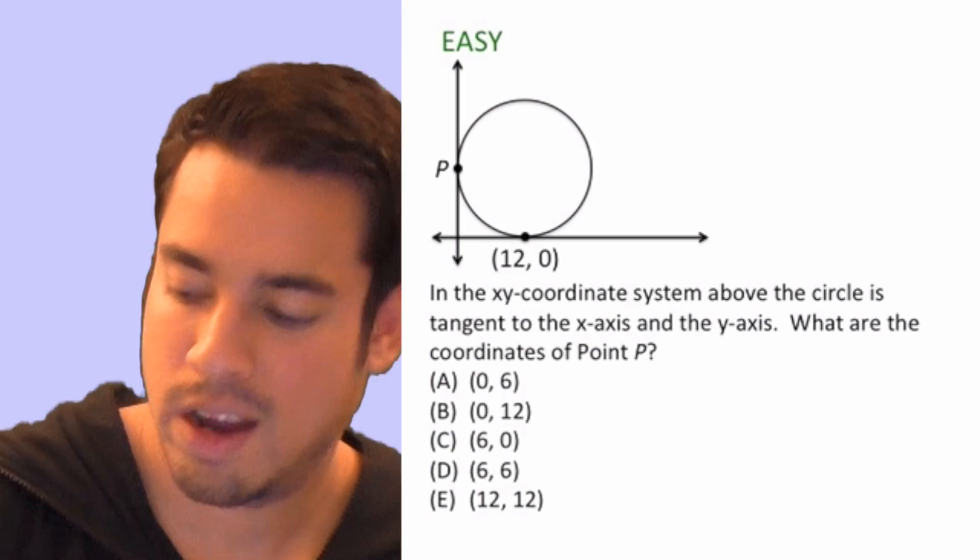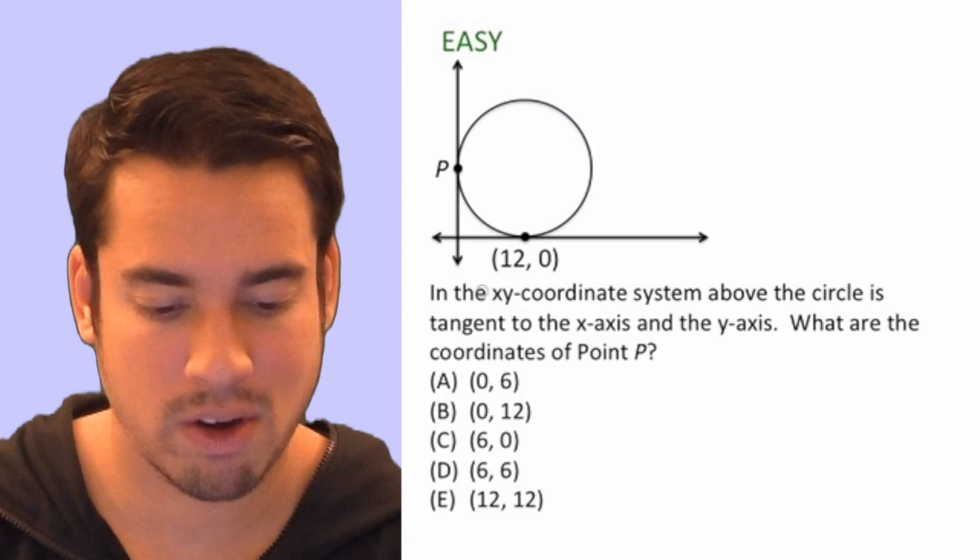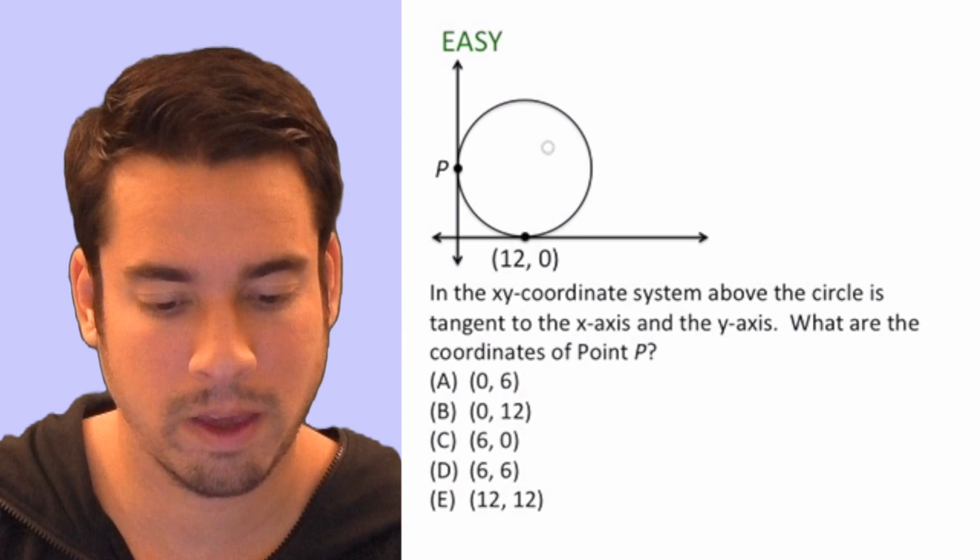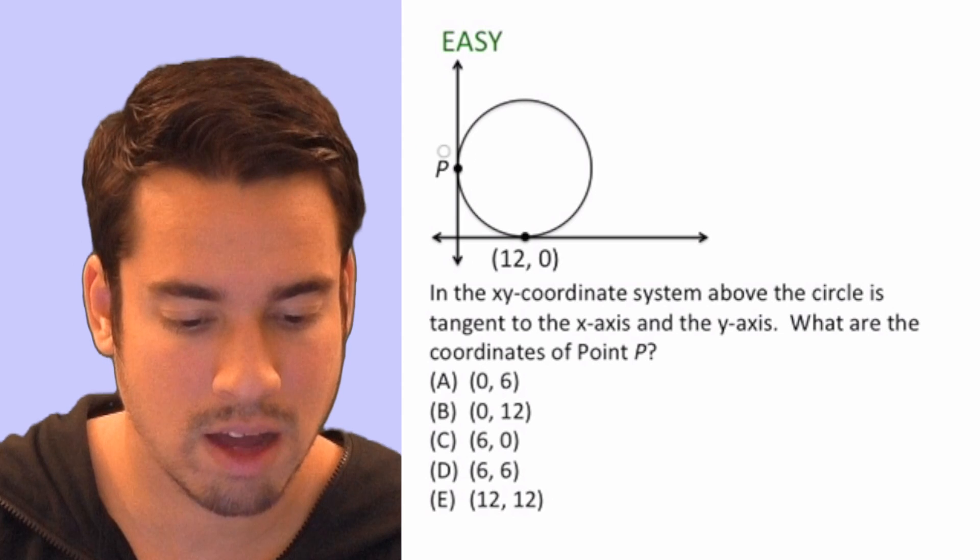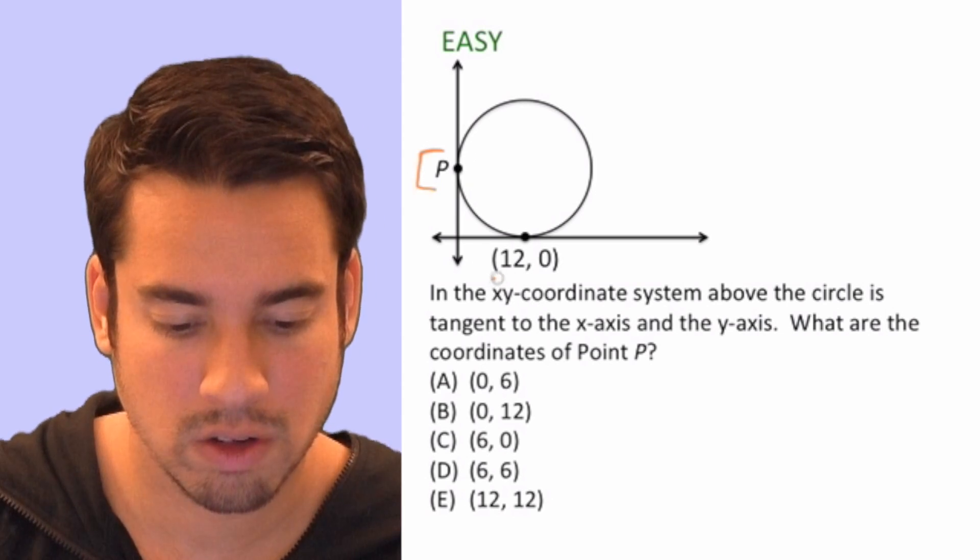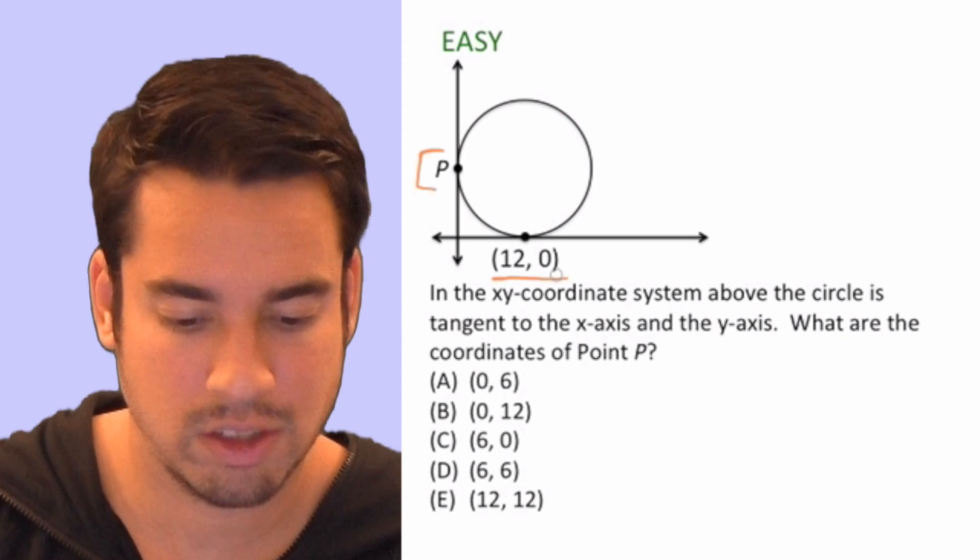Hey guys, welcome to the circle practice problems, level easy. Ready? Let's do it. All right, so here we have our easy problem. Let's read this. We got this nice diagram here, and we notice two things: we've got point P, and then we've also got the second point down here which is (12, 0).